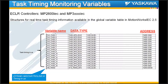If you're not using MotionWorks IEC 2.5 and are using a prior version, you can still add these variables of these particular data types into the global variable worksheet and get the data, since they were supported by controller firmware even prior to 2.5. So even with older firmware and software, you can still see task timing by adding these variables at the appropriate addresses.